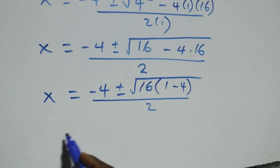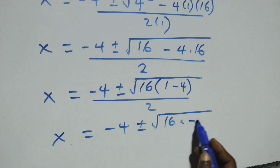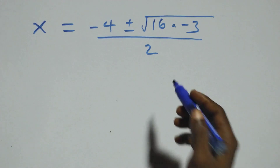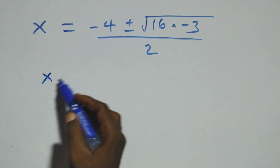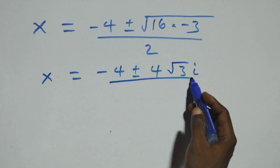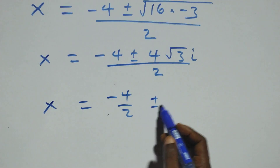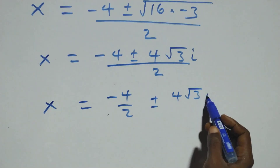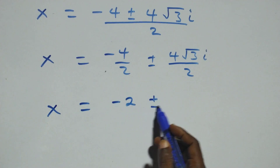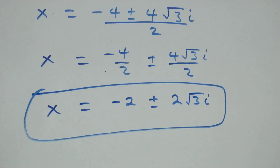We have 16 in common, so x equals to minus 4 plus or minus square root of 16 times 1 minus 4, that is minus 3, over 2. Separating the root of 16, that is 4, we get x equals to minus 4 plus or minus 4 root 3 i over 2, which gives x equals to minus 2 plus or minus 2 root 3 i. These are also two complex solutions.